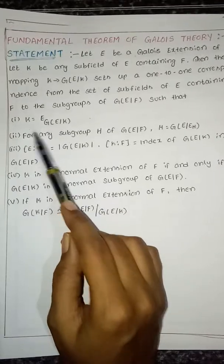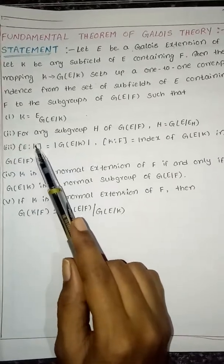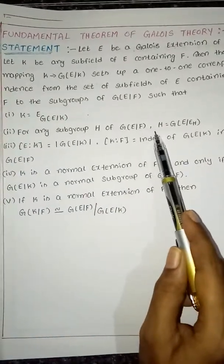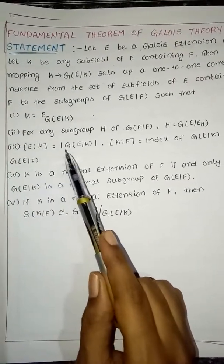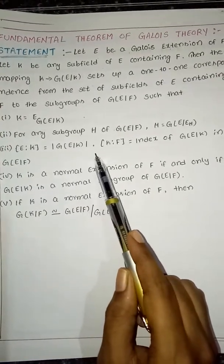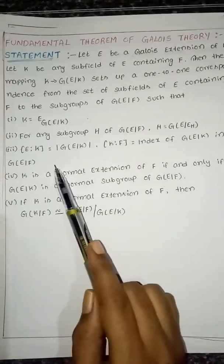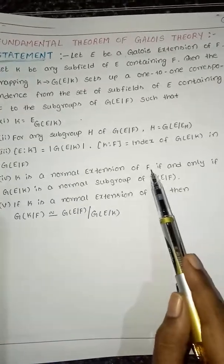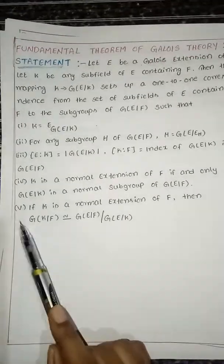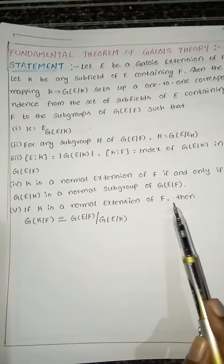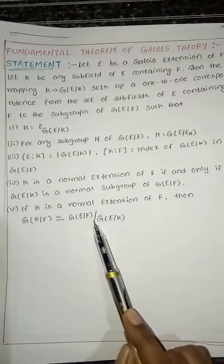First, K is the fixed field of G(E/K). Second, for any subgroup H of G(E/F). Third, the dimension of E over K equals the order of G(E/K), and the dimension of K over F equals the index of G(E/K) in G(E/F). Fourth, K is a normal extension of F if and only if G(E/K) is a normal subgroup of G(E/F). Fifth, if K is a normal extension of F then G(K/F) is isomorphic to the quotient group.